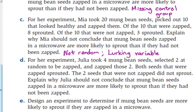Julia used four seeds, selected two at random to zap them, and did not zap the other two. Both that were zapped sprouted, and the two that weren't zapped did not sprout. Why is this not valid? The numbers aren't big enough — two and two, that's not a lot to go on. You've got about a 50-50 chance anyway. So we'll just say insufficient numbers.